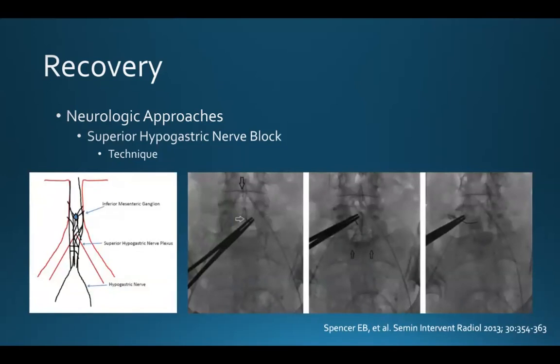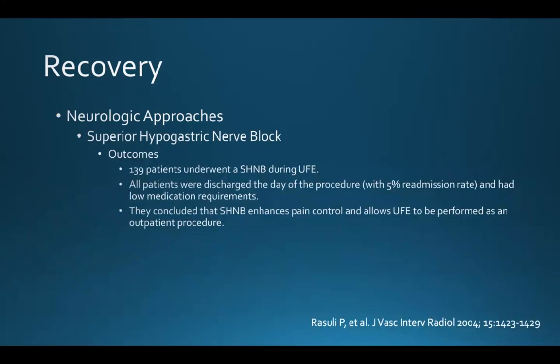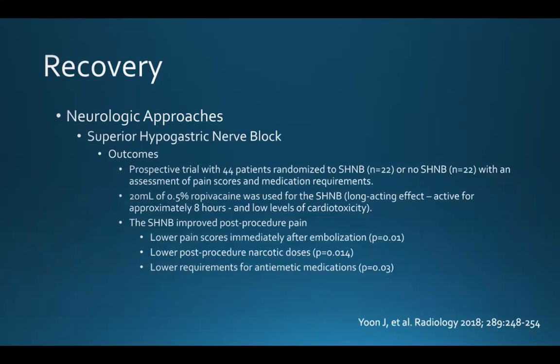This is one of my favorite published diagrams by Brooke Spencer showing this, and you can also see fluoroscopic images localizing the point of access into the superior hypogastric nerve plexus just below the aortic bifurcation. This was first studied back in 2004: 139 patients underwent a superior hypogastric nerve block during fibroid embolization. All of these patients were discharged the day of the procedure with a 5% readmission rate and low medication requirements. The authors concluded that a superior hypogastric nerve block enhances pain control and allows UFE to be performed as an outpatient procedure.